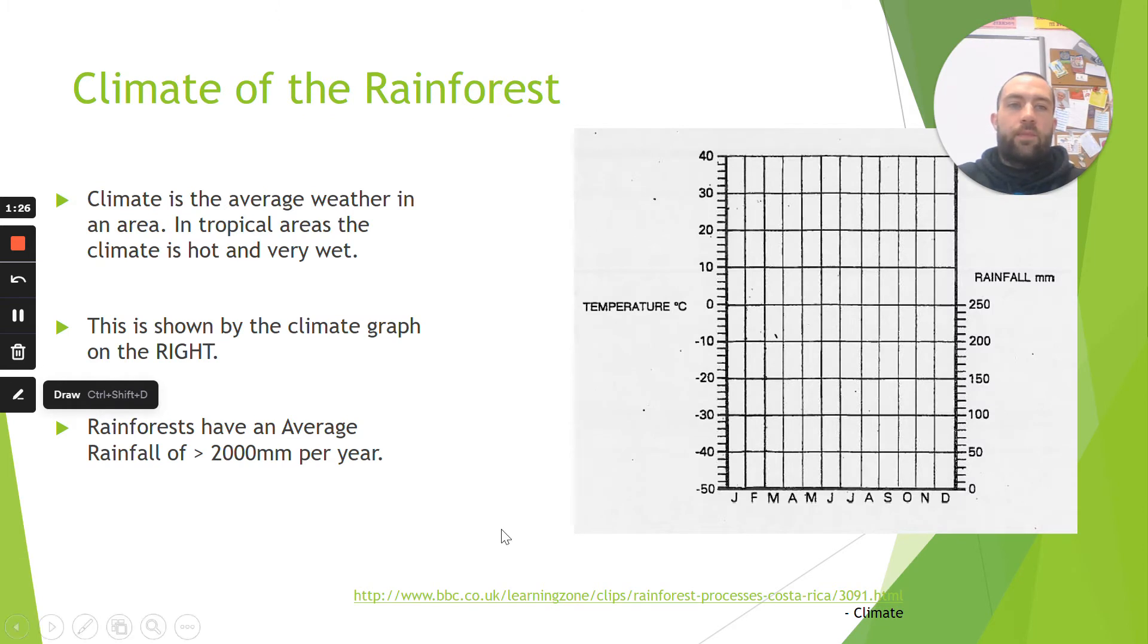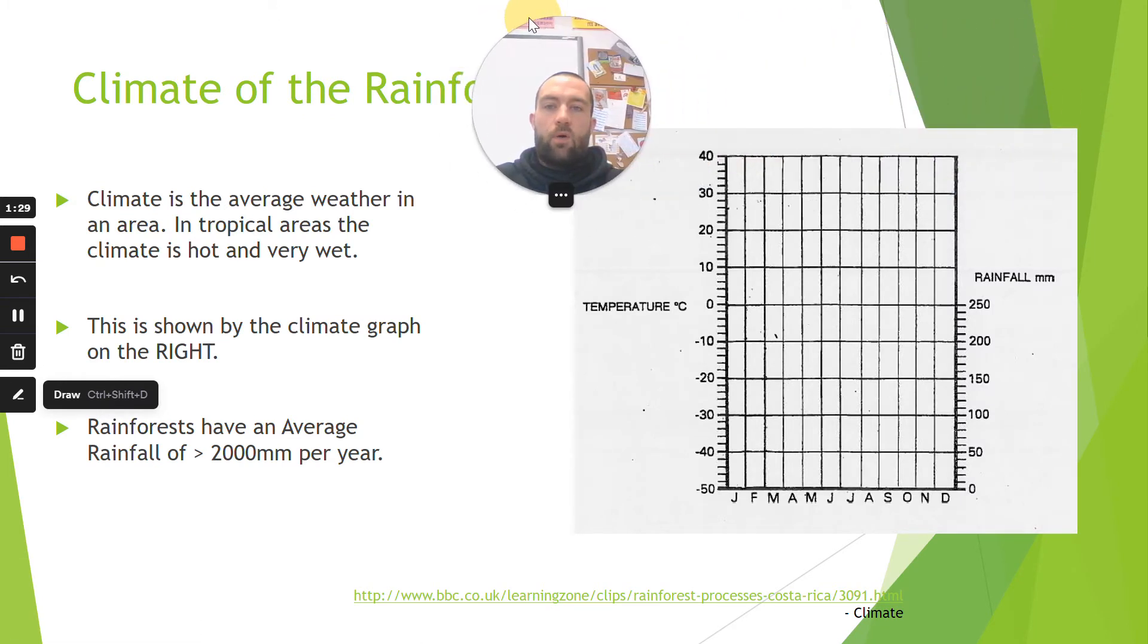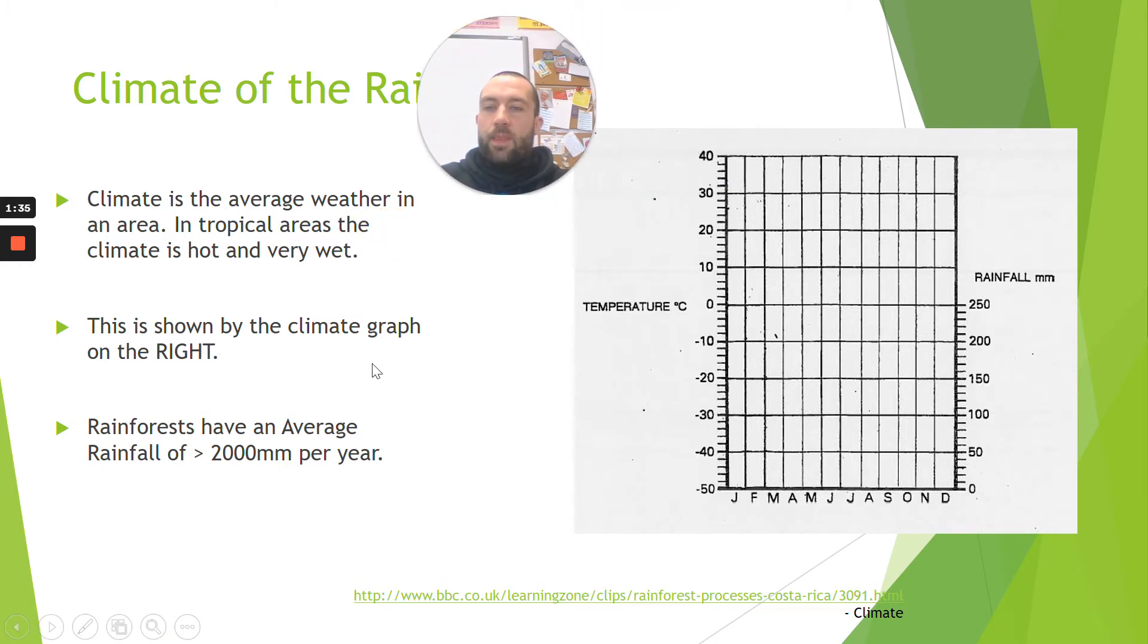So we've got a climate graph which shows us the climate of the rainforest. I'm just going to hide the title. So what we have is rainfall which is shown on the right hand side of the climate graph, and we use this scale here from zero to 50, 100, and so on. So rainfall is shown on the right hand side of our climate graph, and we know that rainforests have an average rainfall of over 2000 millimeters per year. So that's every month along the bottom. If we added all that up it would be more than 2000 millimeters.